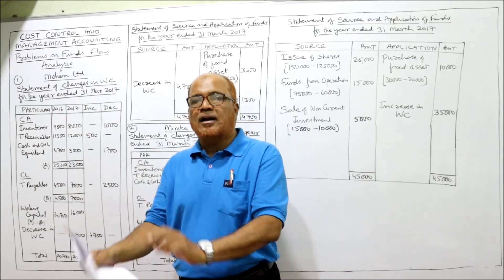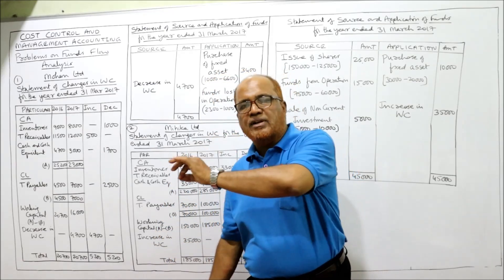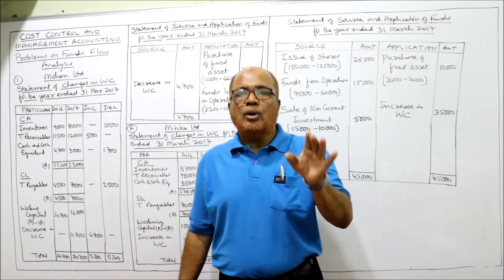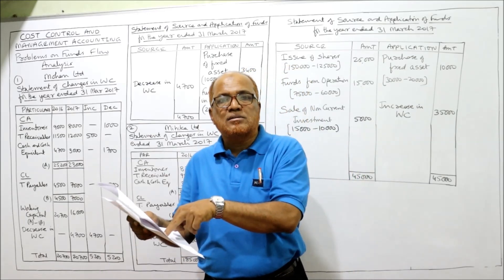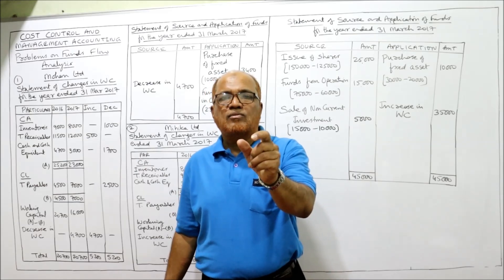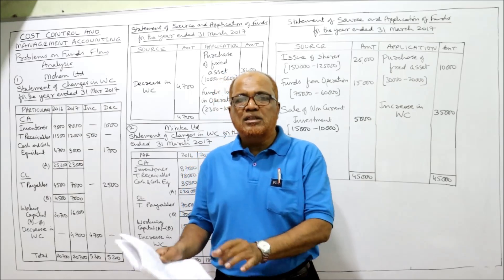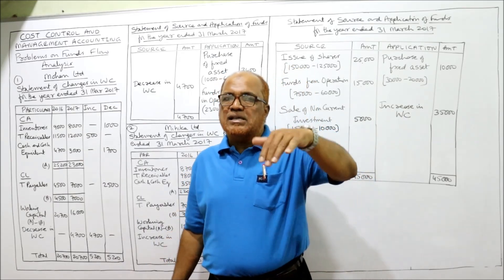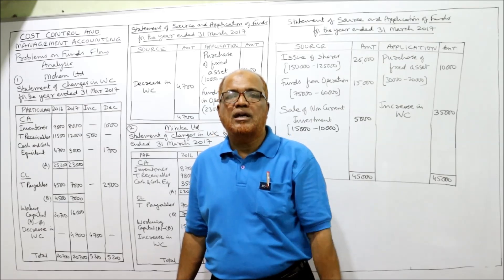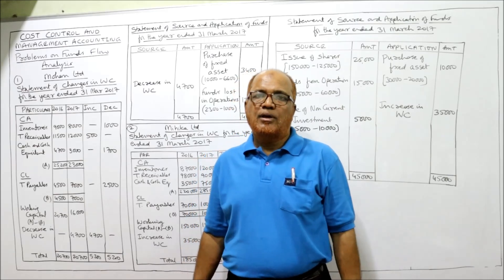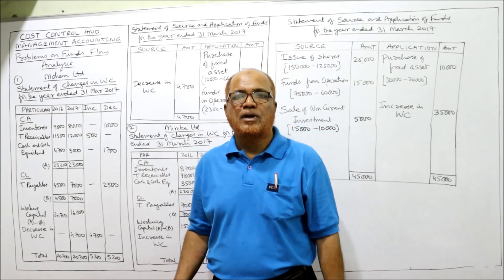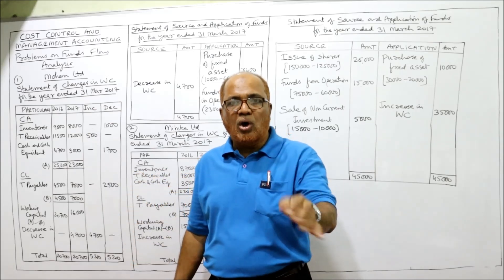Reserves and surplus: last year 2,300, current year 1,000. One of the important points in funds flow analysis is funds from operation — this is the profit adjusted for non-cash items. Every year, whatever profit the company earns, that will be kept in reserves and surplus. If reserves and surplus increased, it means funds from operation. If decreased, it means funds lost in operation. In our problem, it decreased, so funds lost in operation.